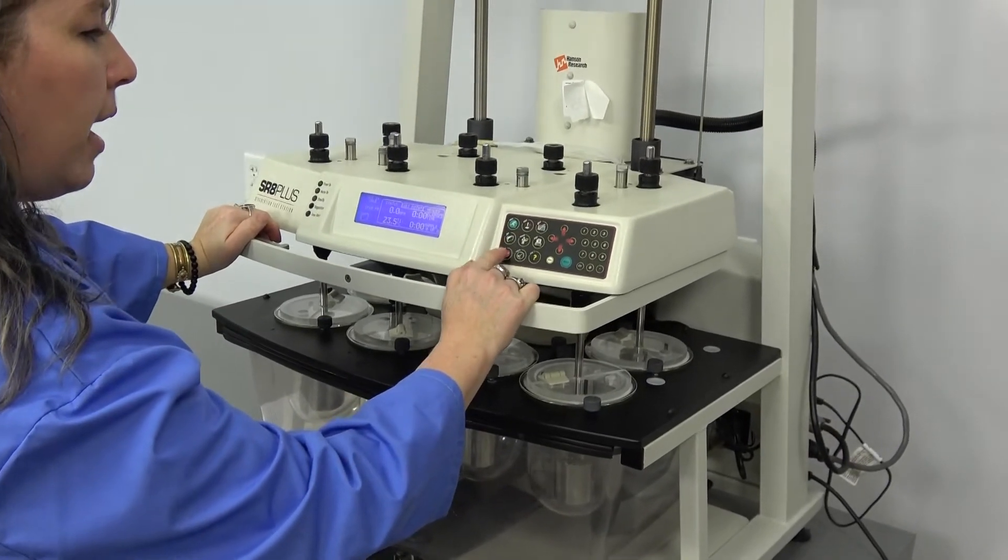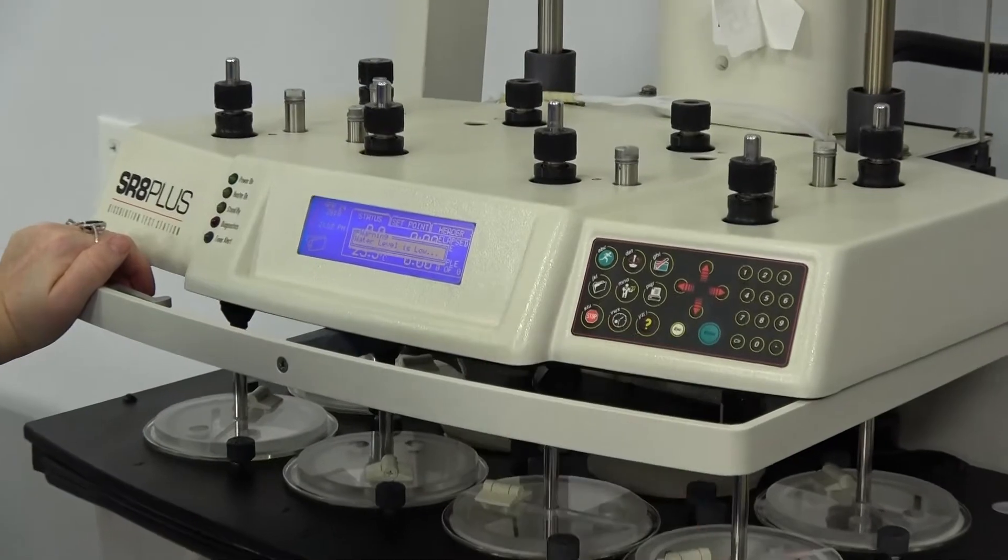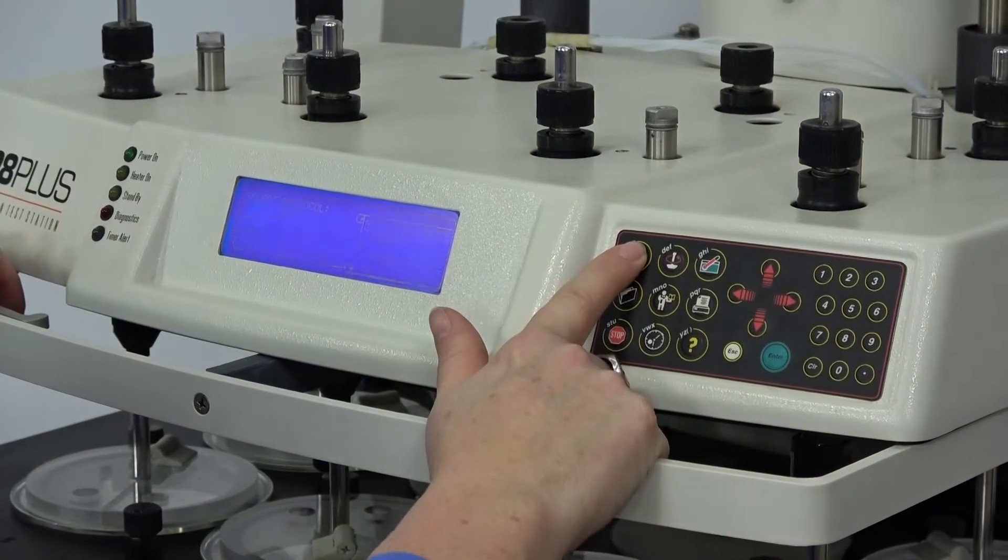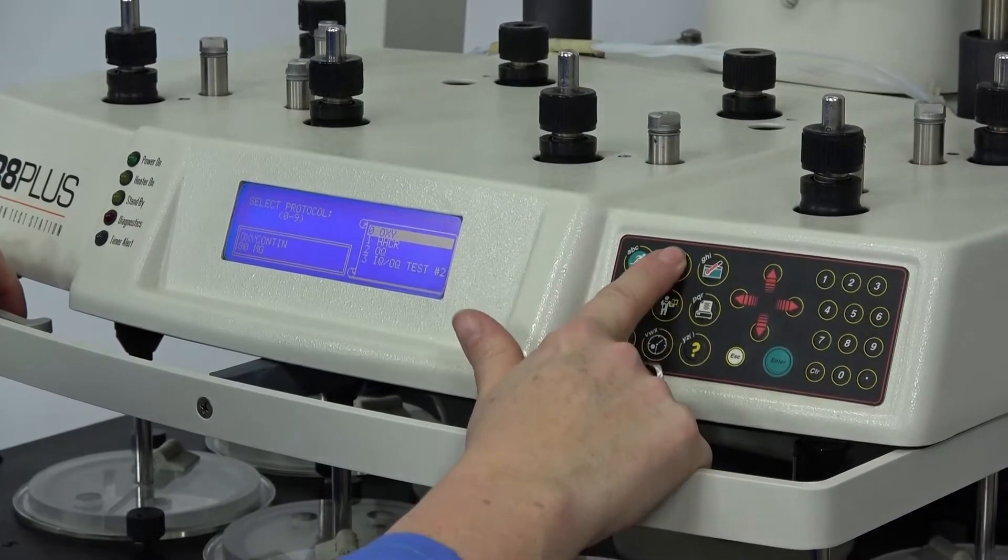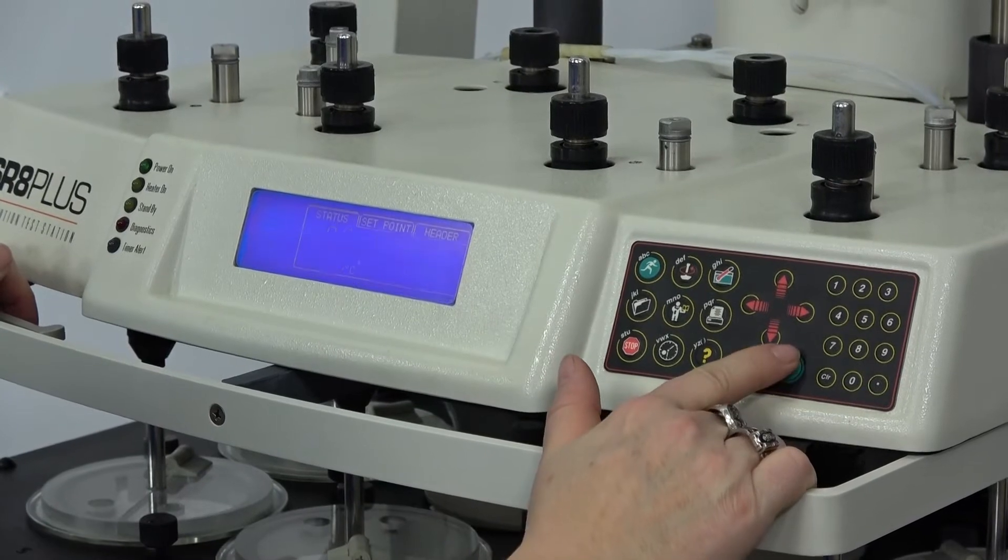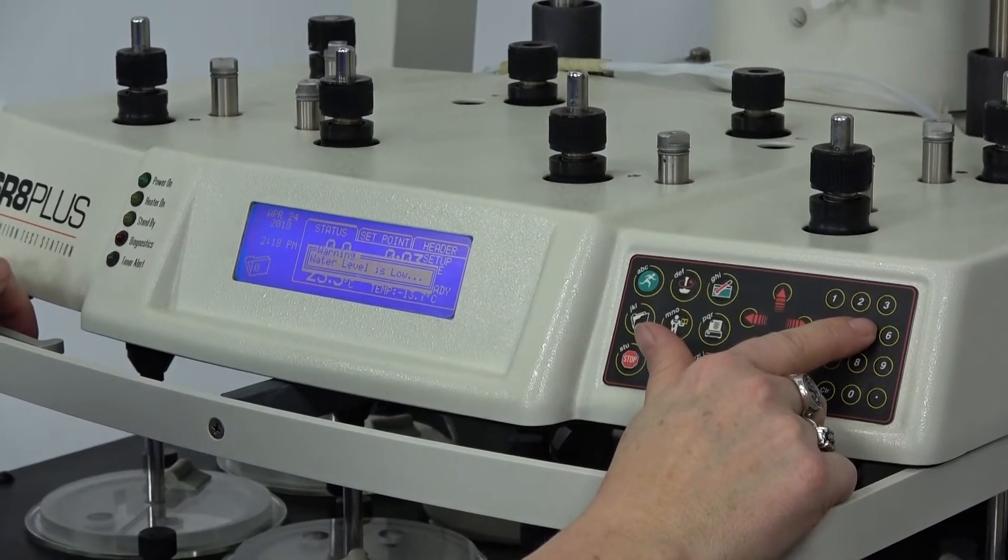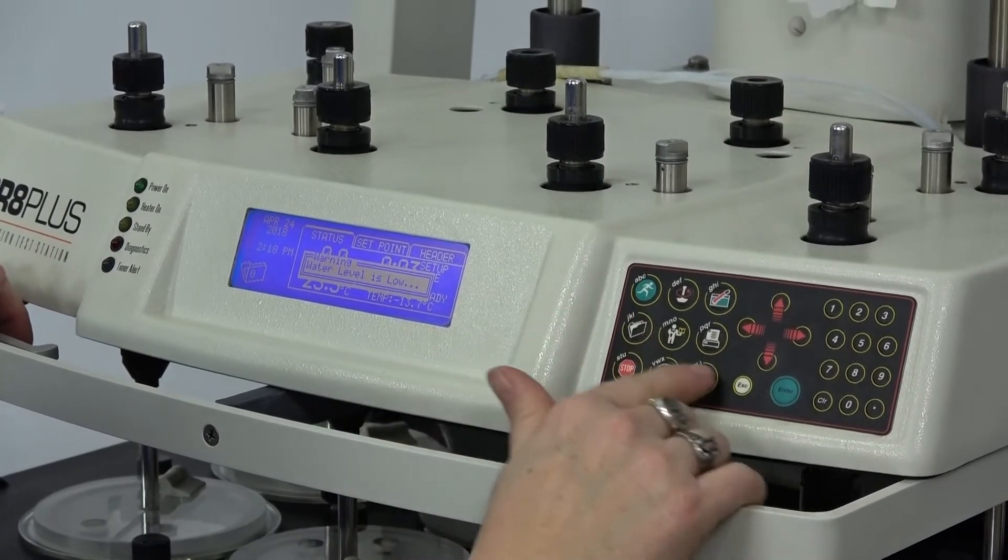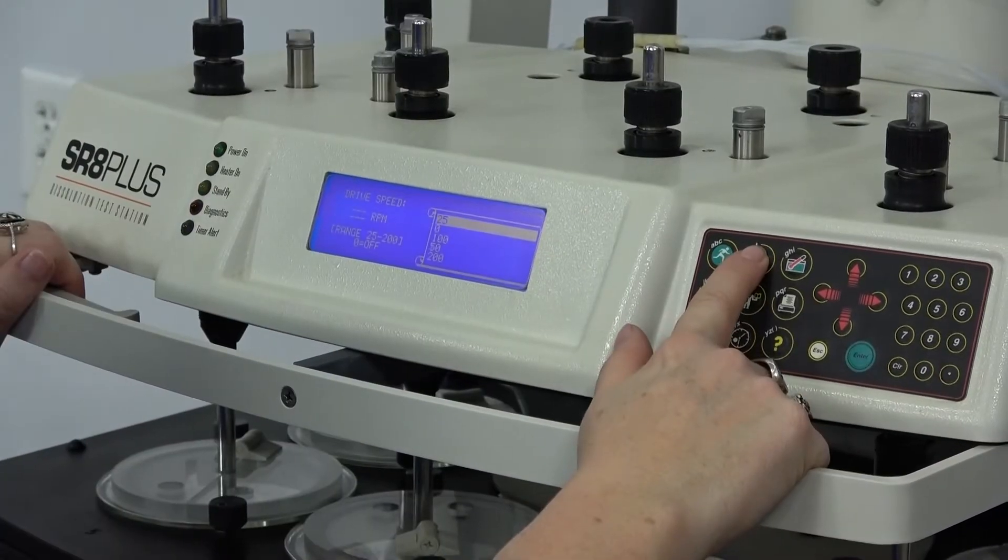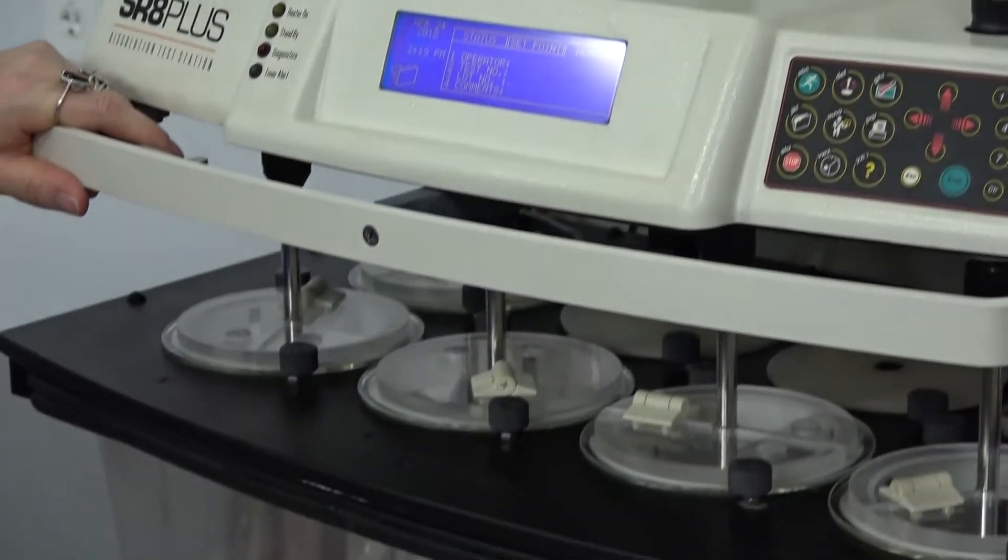We're going to go ahead and program it. It's telling me that the water level is low because we have no water in it right now. Our techs have tested all of these to make sure that it does heat. We're going to go ahead and start it on a nice easy cycle. There we go. So you'll see that all of these are turning.